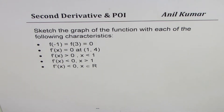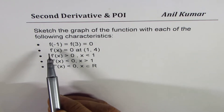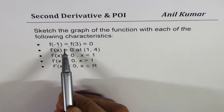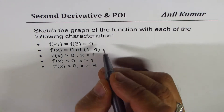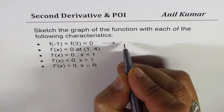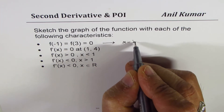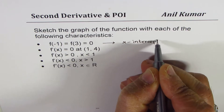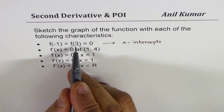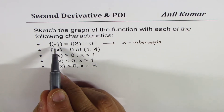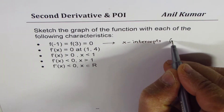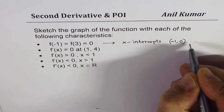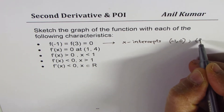The first condition is f(-1) = f(3) = 0. When I give you that, it means we are talking about x-intercepts. So we have two x-intercepts for this function: one is at minus 1 and the other one is at 3. So these points are (-1, 0) and (3, 0).